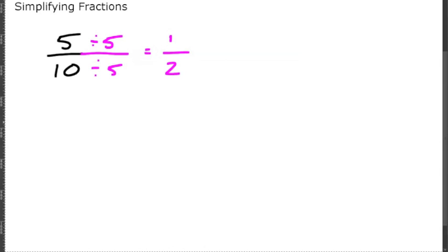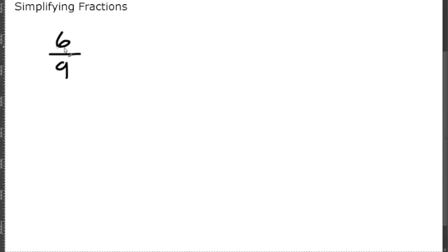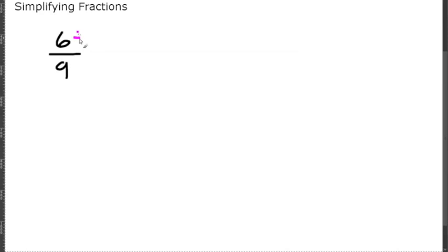Let's look at another example. Can we divide these by one? Yes, but that doesn't matter because it would still be itself. How about dividing the top by two? We can divide the top by two, but how about the bottom? No — nine is odd so we cannot divide this by two. Let's go to the next number. How about three? Three goes into six and three also goes into nine. We can divide both by three because four, five, and six don't go into both of them.